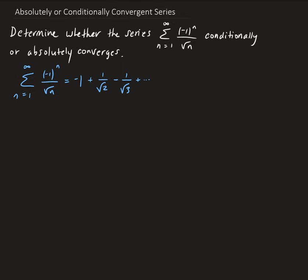Let's check the two conditions to see whether this is converging. Here, the nth term is 1 over root n. We take the limit as n goes to infinity. The denominator is increasing, so the overall result goes to 0.